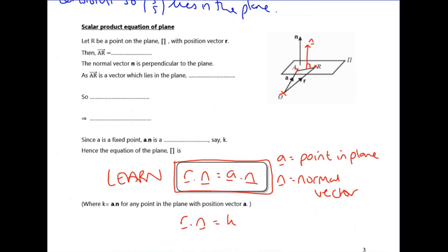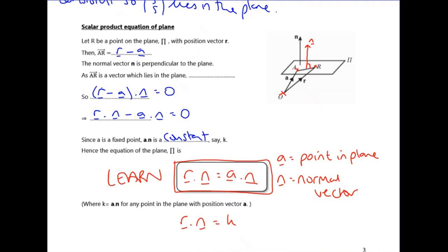Any vector lying in the plane — such as the vector from A to R — is perpendicular to n. You can write this vector as (r − a). Since it's perpendicular to n, the dot product gives zero: (r − a) dot n = 0. Expanding this out: r dot n minus a dot n = 0, and then taking a dot n to the other side gives r dot n = a dot n, where a dot n is a constant.